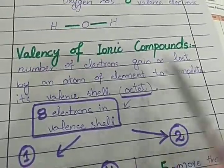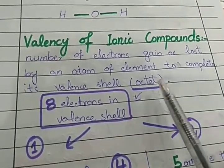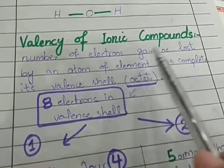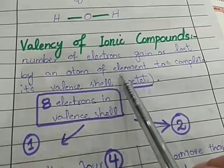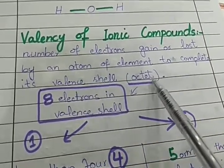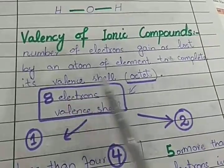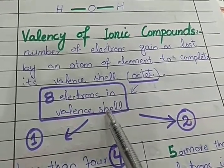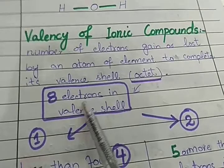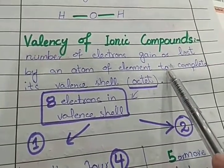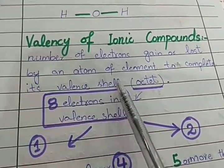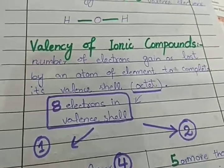Next, valency of ionic compounds. In ionic compounds, valency is the number of electrons gained or lost by an atom of an element to complete its valence shell — which means achieving the octet (8 electrons). The outermost shell is the valence shell, and when it has 8 electrons, we call it the octet. In ionic compounds, atoms either gain or lose electrons.